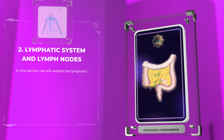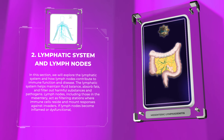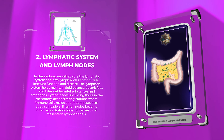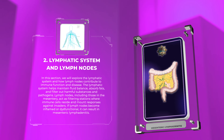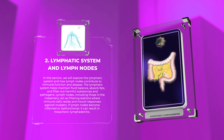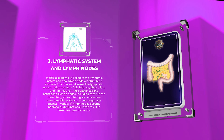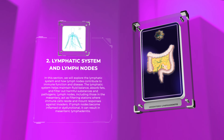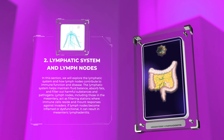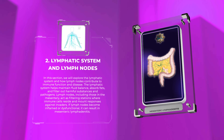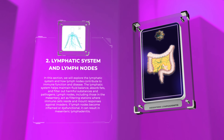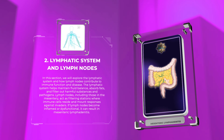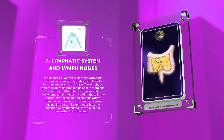We will explore the lymphatic system and how lymph nodes contribute to immune function and disease. The lymphatic system helps maintain fluid balance, absorb fats, and filter out harmful substances and pathogens. Lymph nodes, including those in the mesentery, act as filtering stations where immune cells reside and mount responses against invaders. If lymph nodes become inflamed or dysfunctional, it can result in mesenteric lymphadenitis.